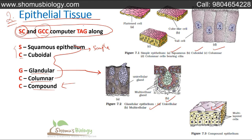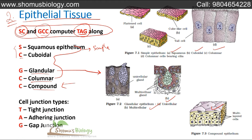The third word in the sentence is 'tag,' which gives us the types of cell junctions. TAG: T for tight junction, A for adherent junction, and G for gap junction. These are intercellular junctions — present where two cells connect. Gap junctions connect two cells; there are also adherent junctions and tight junctions. So there are three types of cell junctions.